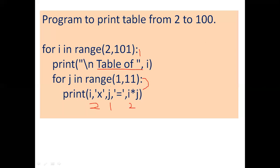Control goes back to J and assigns 2, so it prints 2 x 2 = 4. Then J becomes 3, and 2 x 3 = 6. Then J is 4, so 2 x 4 = 8. Then J is 5, so 2 x 5 = 10. This continues until J reaches 10, printing 2 x 10 = 20.